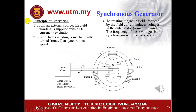This is a quite popular question: how does a synchronous generator work? You have to memorize this. From an external source, the field winding is supplied with DC current to excite the rotor. Then the rotor winding is mechanically turned or rotated at synchronous speed. The rotating magnetic field produced by the rotor will induce a voltage at the stator, and the frequency of that voltage is the same as the synchronous speed of the rotor. This is usually worth around five to six marks.